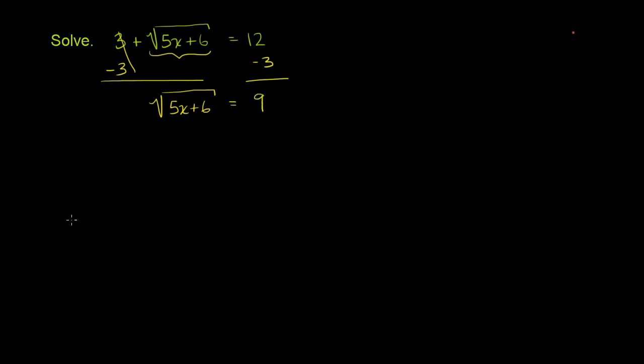And now we can square both sides of this equation. So we could square the principal square root of 5x plus 6, and we can square 9. When you square the square root of 5x plus 6, you're going to get 5x plus 6.